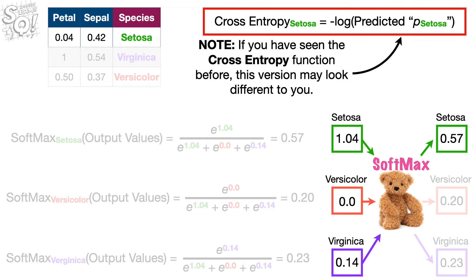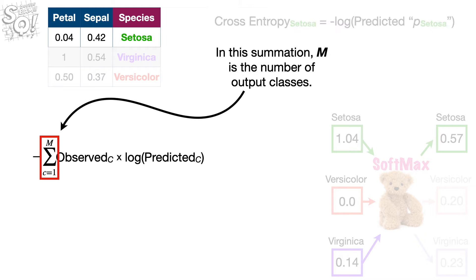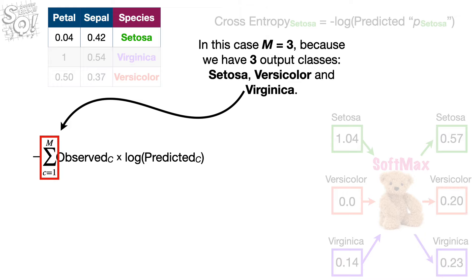Note, if you have seen the cross entropy function before, this version may look different to you. The difference is because neural networks only need a simplified form of this general equation. In this summation, M is the number of output classes. In this case, M equals 3, because we have three output classes, Setosa, Versicolor, and Virginica.